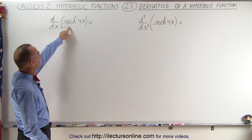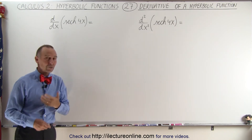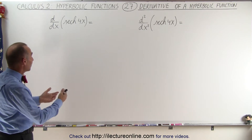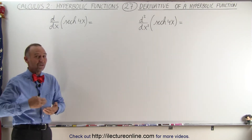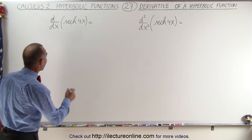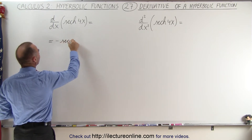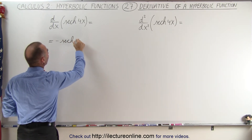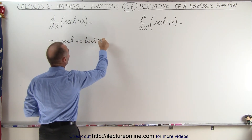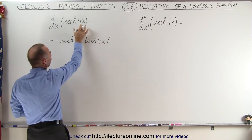Here we have the hyperbolic secant of 4x. The derivative of the regular secant is secant times tangent, so the derivative of the hyperbolic secant is also secant times tangent, except we need a negative sign as well. This means it becomes equal to negative hyperbolic secant of 4x times the hyperbolic tangent of 4x, times the derivative of the inner function.